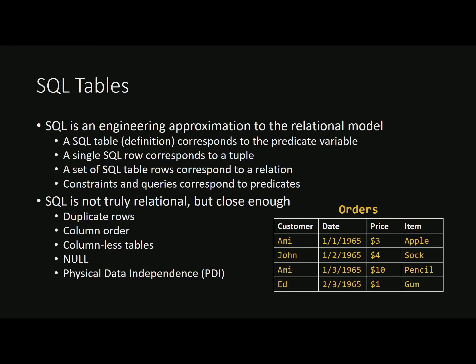SQL tables are an approximation to the relational model — not truly relational, because they allow things like duplicate rows and null values, and they are not fully physically independent from the underlying storage. But they are close enough. If we take the same data and put it in a SQL table, the table name and definition represent the predicate variable — 'there exists an order,' 'there exists a book.' Every row is a tuple, all rows together form the relation, and all constraints and queries we apply are the predicates.